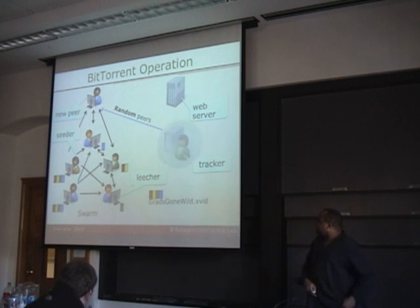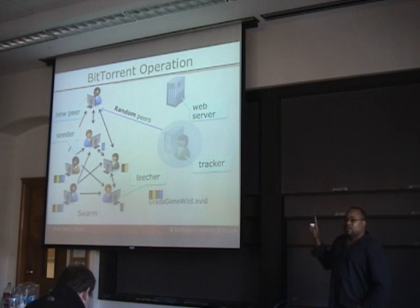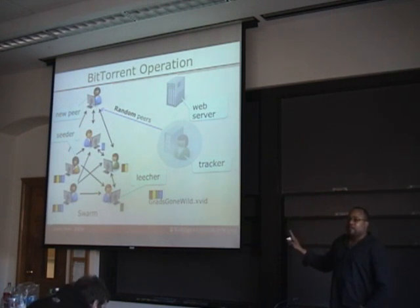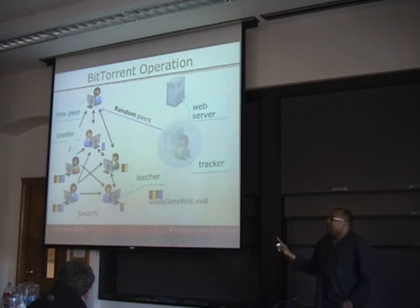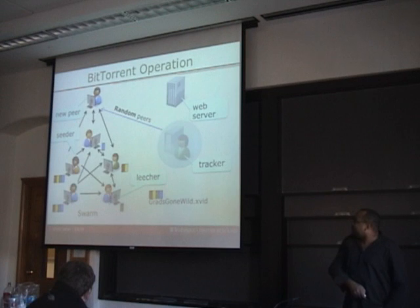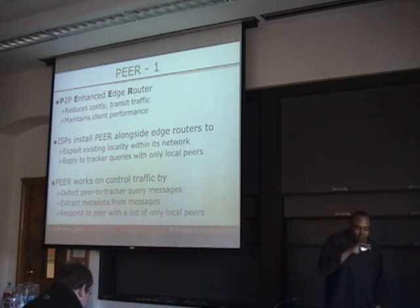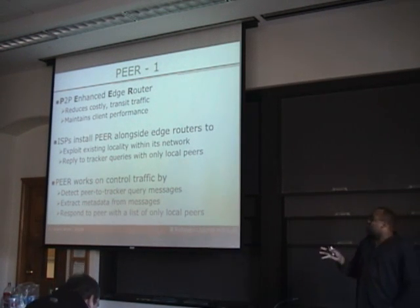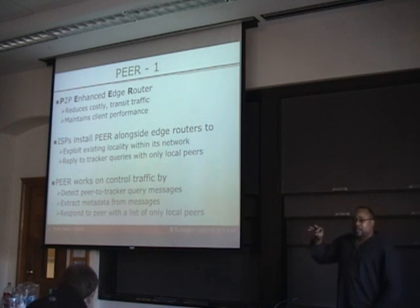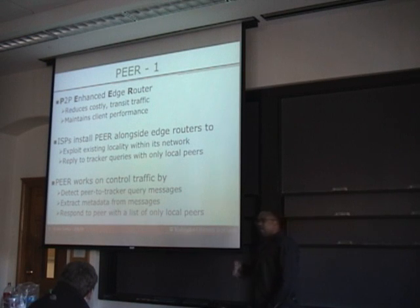The tracker is the central focus of our device. We notice that the tracker returns a random list of peers, totally unaware of the location of peers — and that is where the problem really begins. Our device basically emulates an ISP-local tracker. PEER is installed along the ISP's edge routers, and instead of returning a random list of peers, it returns a list of only local peers, effectively reducing transit traffic.